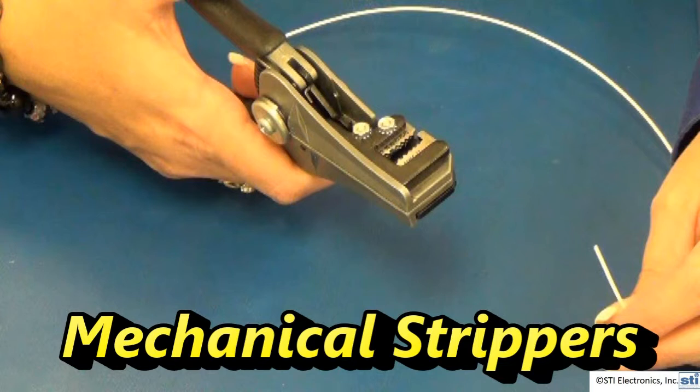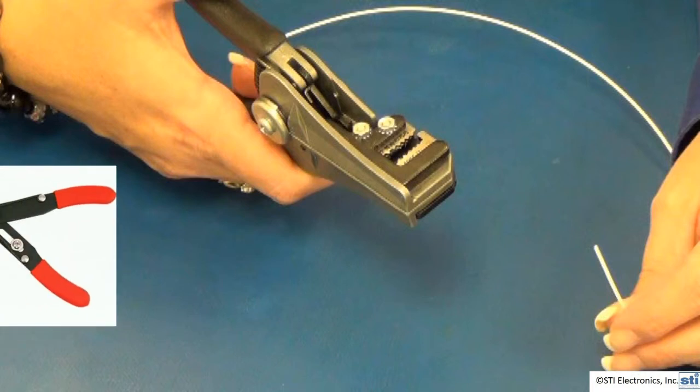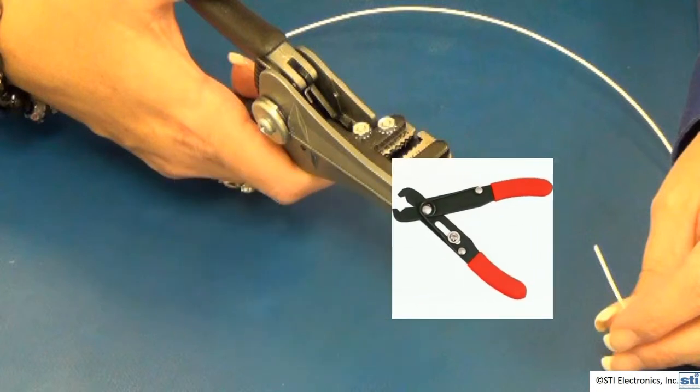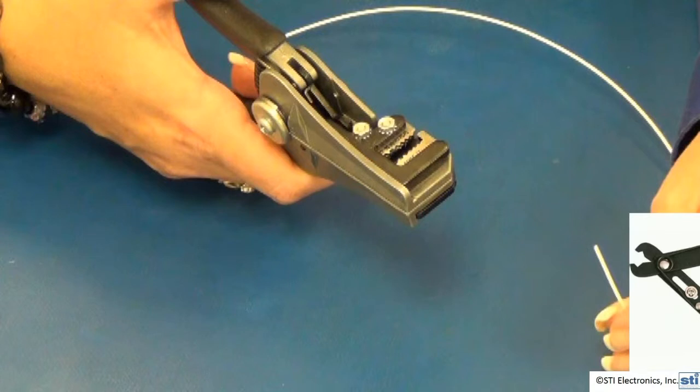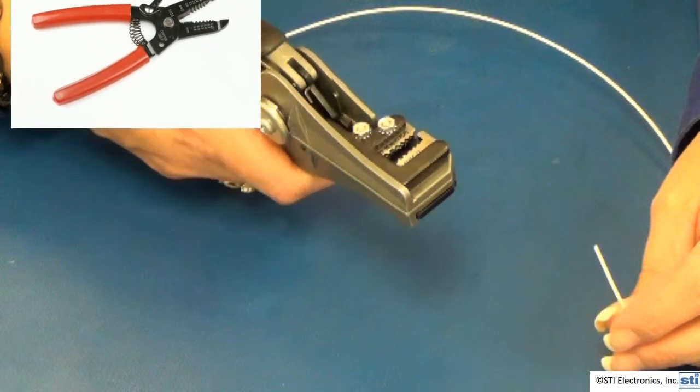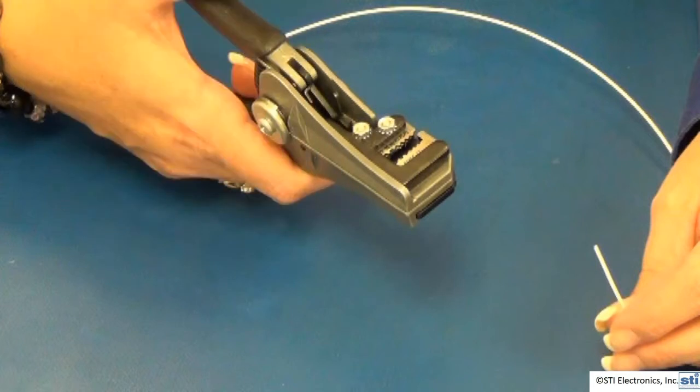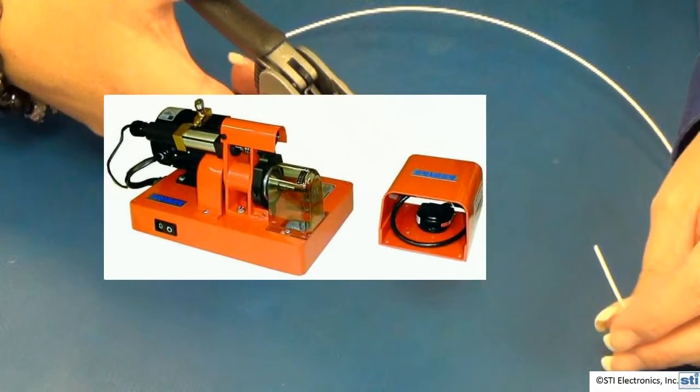Let's begin with mechanical strippers. There are various types of mechanical strippers with varying degrees of control. One type is totally variable and can be selected by the operator. Another type is what we call a fixed die configuration. And then, there are highly automated wire strippers.